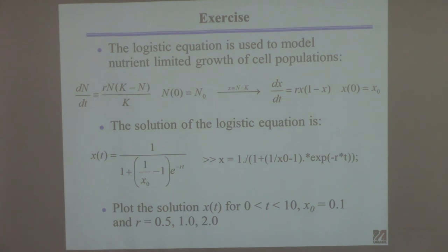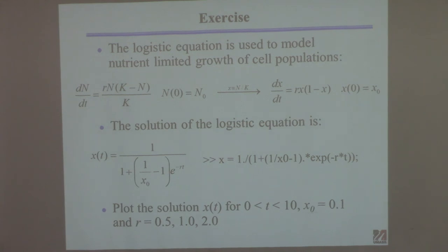You have to create the vector t — remember — just like I created the vector x in the last problem. If you put the semicolon after the command, nothing gets printed but it did create the vector. Look in the upper right-hand corner to see it in the workspace. What you did is suppress the output — so it created it, you just said I don't want to see it printed to the screen. You don't want to see it because what are you going to do with a hundred elements printed to your screen?